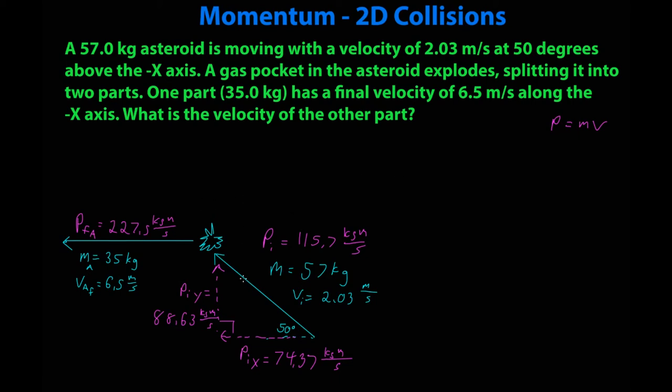Okay, so looking at this, this asteroid splits. There is an initial momentum on the y. The final momentum for this piece is only on the x. Therefore, we definitely have a final momentum on the y and that final momentum on the y has to be the same as the initial momentum on the y, 88.63 kilograms meters per second.